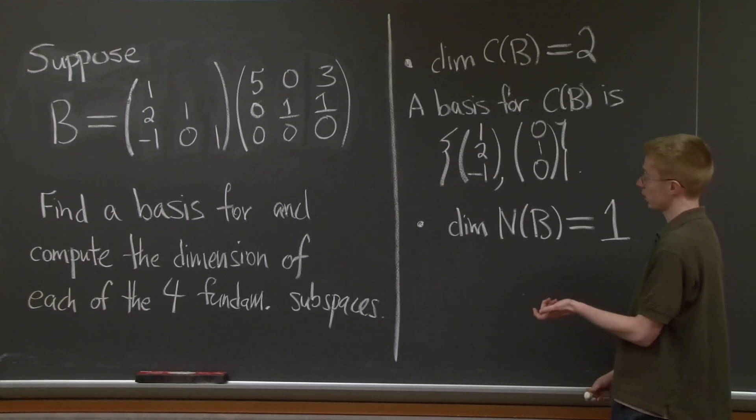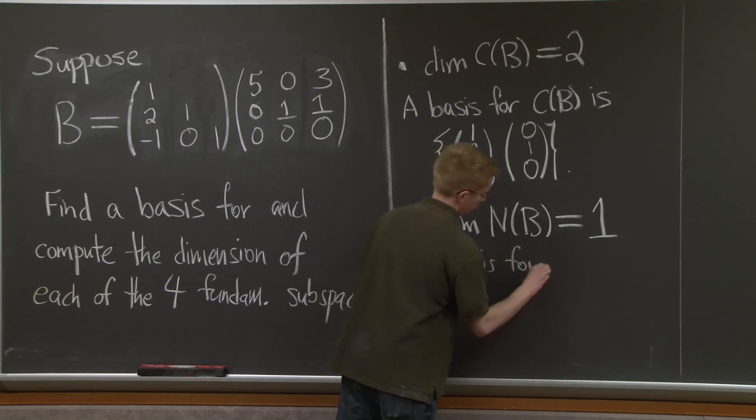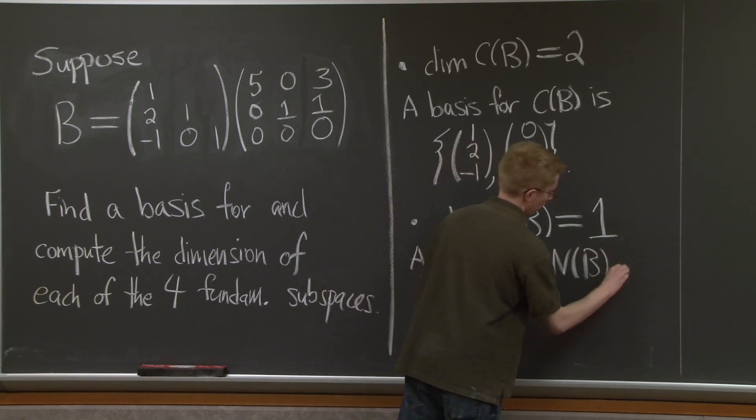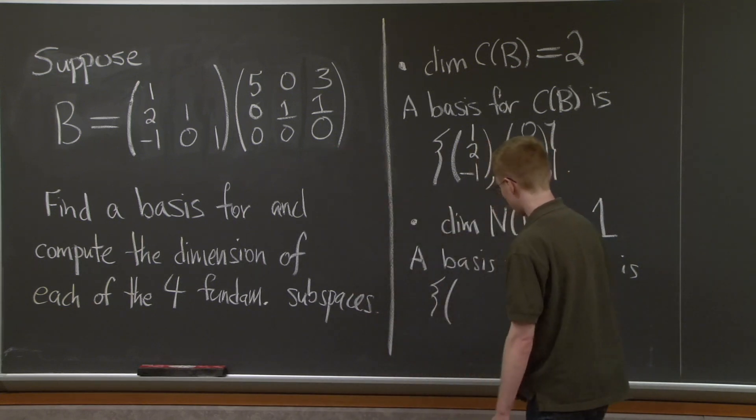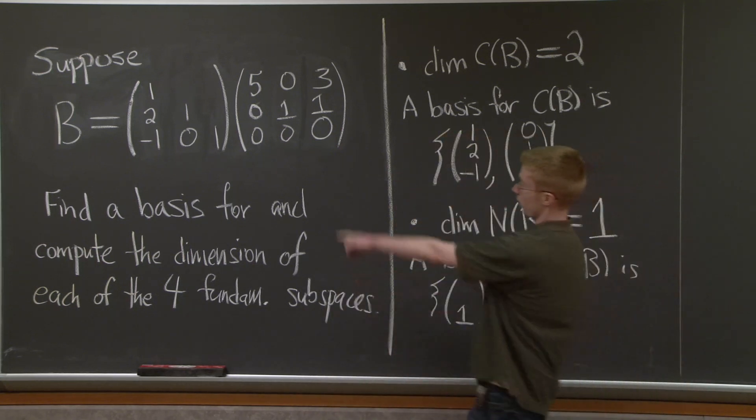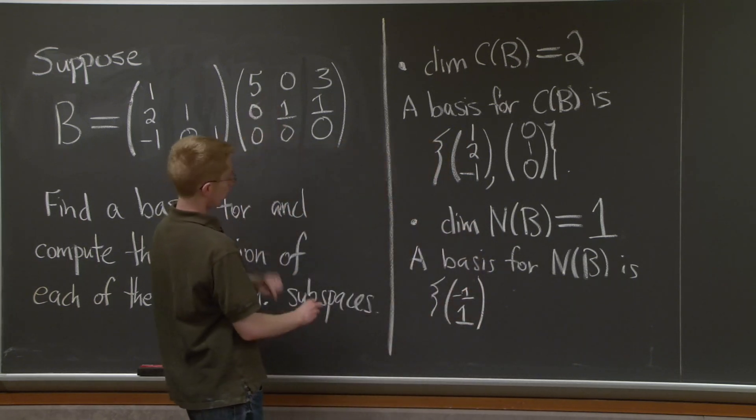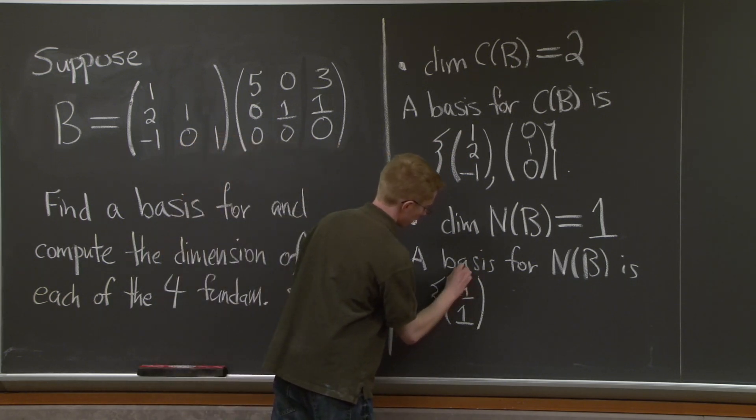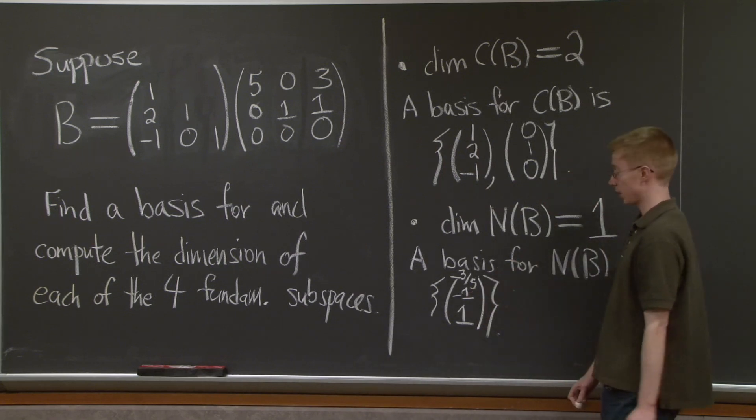And how do we find this 1 vector in the null space? What we do is we can just plug in 1 for our free variable and we can back solve to get the other two. So this equation tells me that my second number is negative 1. And this equation tells me that third variable is negative 3/5. That's a negative 3/5 if it's difficult to see that on the tape.